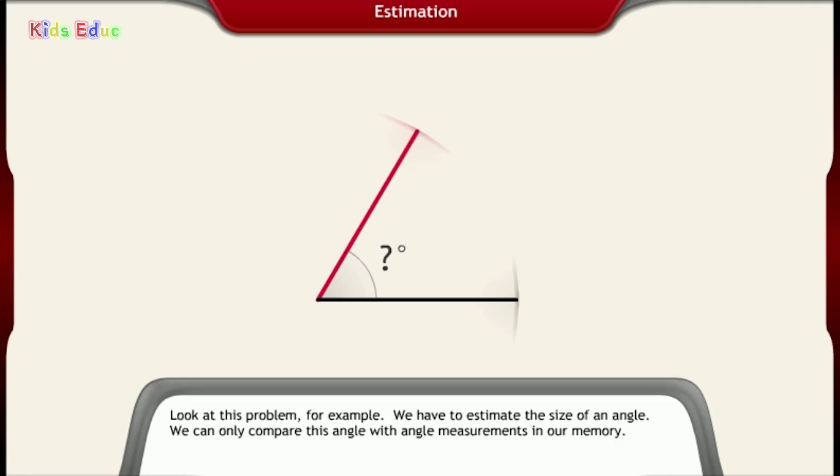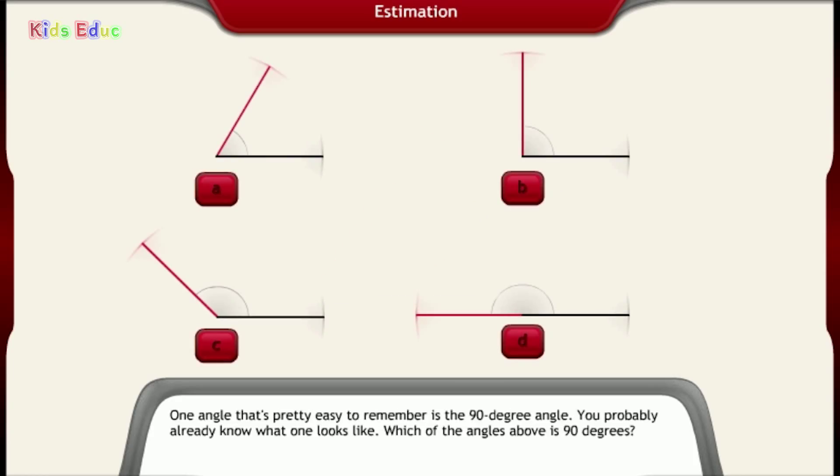Look at this problem, for example. We have to estimate the size of an angle. We can only compare this angle with angle measurements in our memory. One angle that's pretty easy to remember is the 90-degree angle. You probably already know what one looks like.